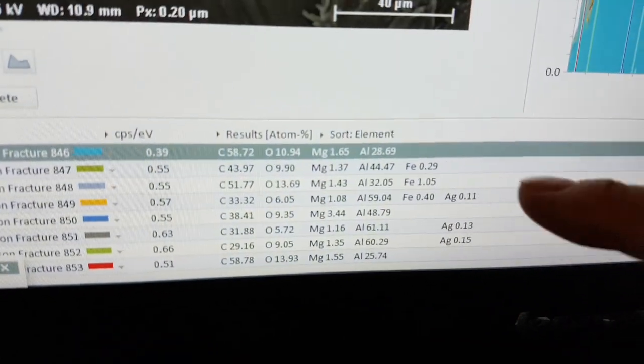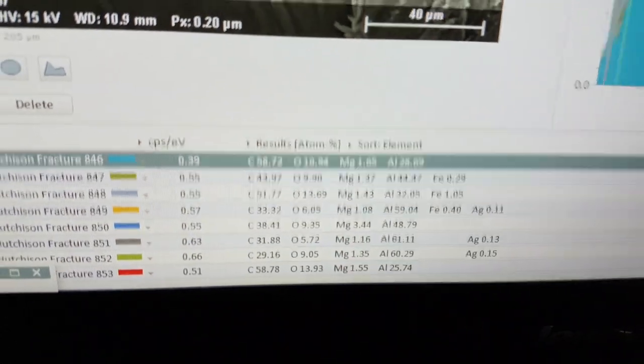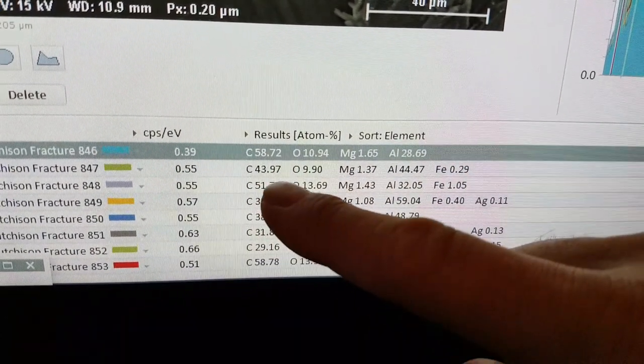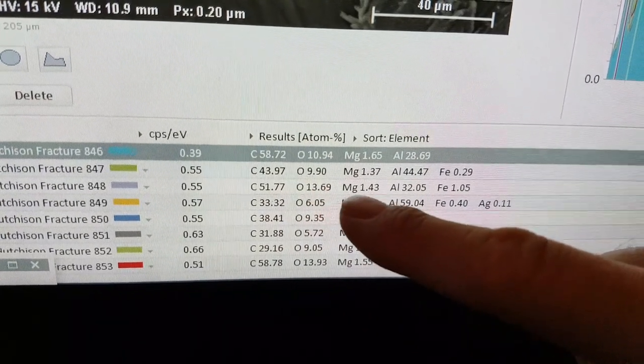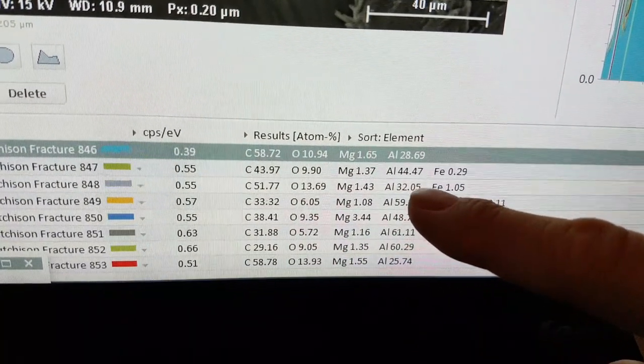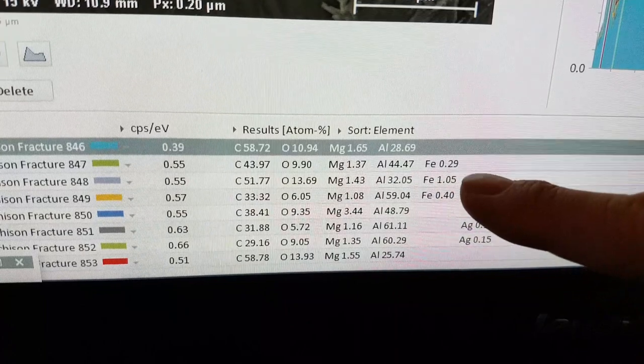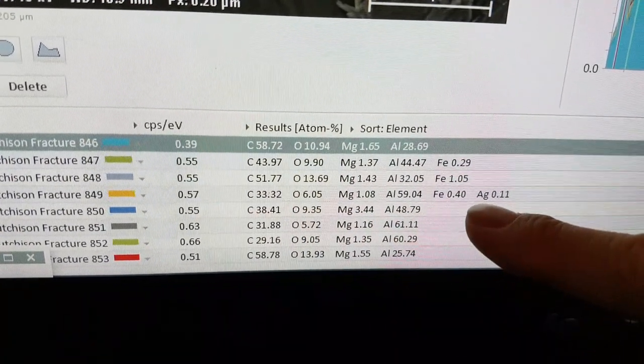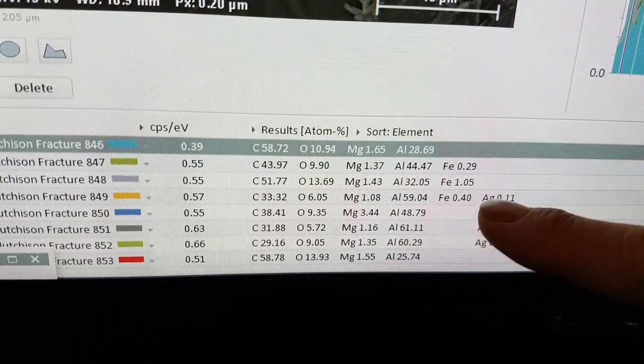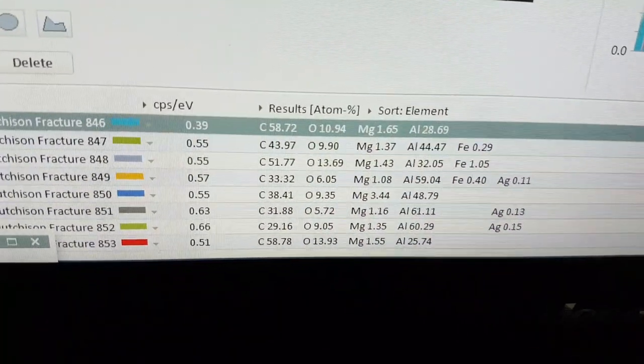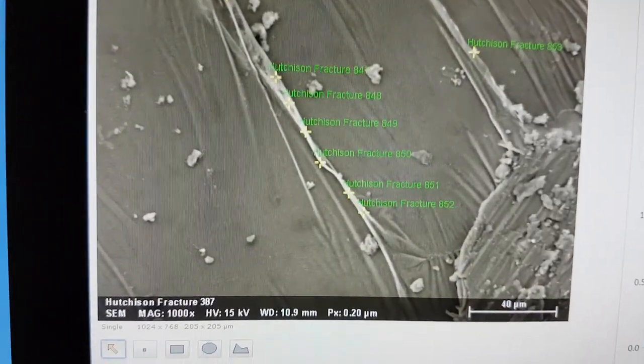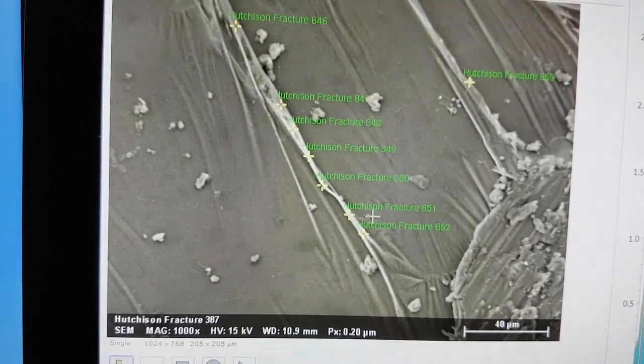And it would appear that as you go down the strand you have like carbon, oxygen, magnesium, aluminum, and then carbon goes down. Oxygen is about the same, magnesium is about the same, but aluminum goes up. And then there's a bit of iron, and then there's more iron, and then there's a little bit less iron. But then there's silver, so that's quite fascinating, and this is part of the actual structure. So we're going to have a look at a couple more of those and see if we see the same pattern.